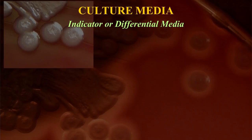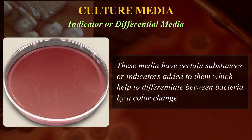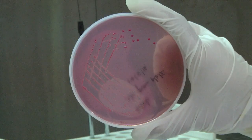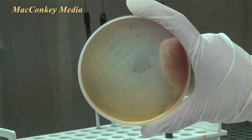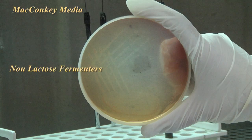Indicator or differential media have certain substances or indicators added to them which help to differentiate between bacteria, usually by a colour change. An example is McConkey's medium, which produces red-coloured colonies of bacteria that are able to ferment the carbohydrate present in the medium. In contrast, bacteria which do not ferment carbohydrate produce colourless colonies.